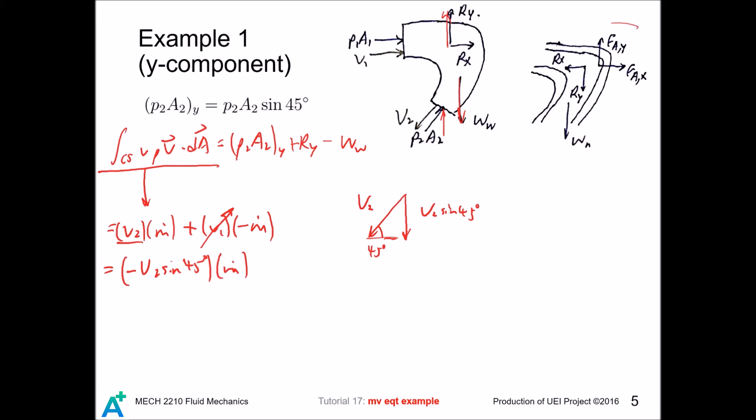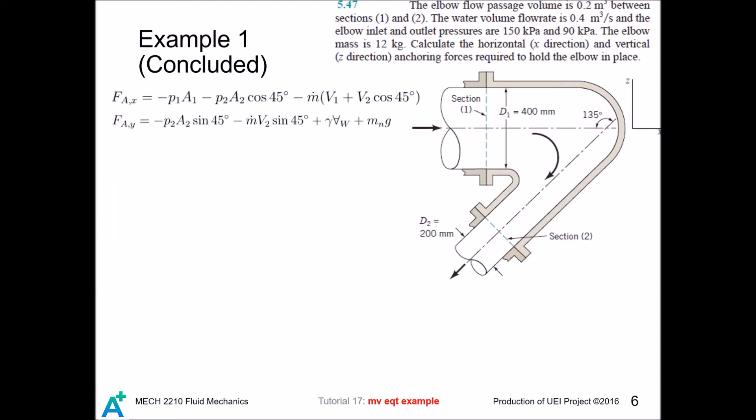And we do force balance for the nozzle. Only the anchoring force points upward and the other two point down. So we now have symbolically found the anchoring force in x component and y component. What's left is to find the values of these and plug in the values.